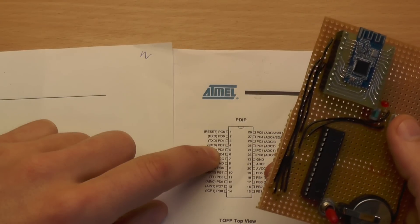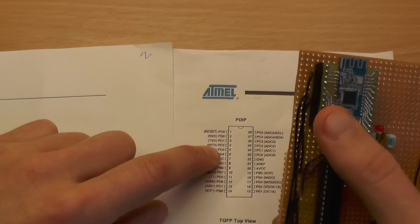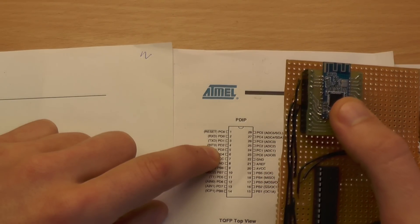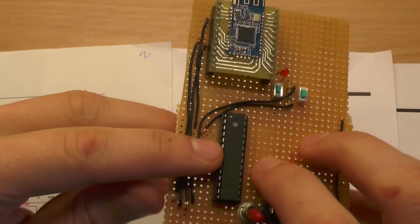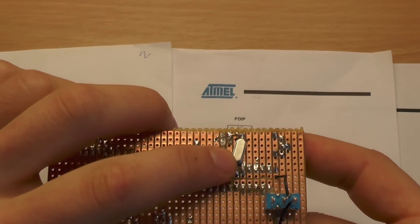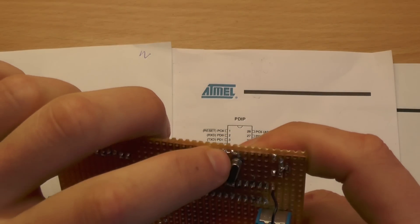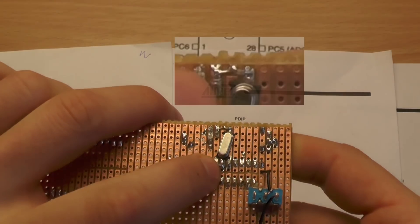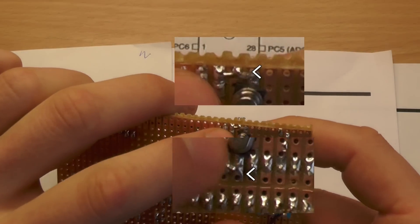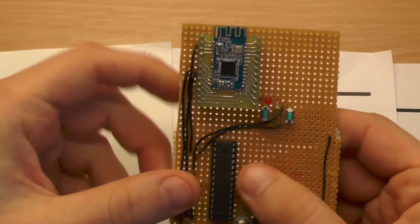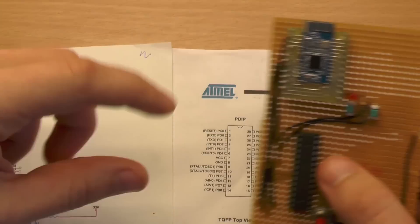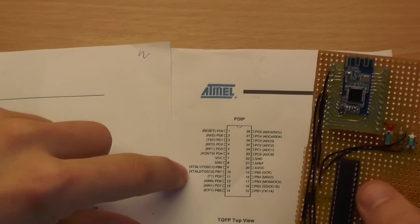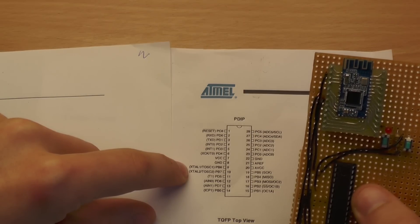The ATmega8 senses that button and sends the corresponding string via UART to the HM10 module. When you are using UART on the ATmega8 you need an external crystal and the 22 pF caps that I'm using here. Otherwise the internal oscillator isn't precise enough and you will get garbage over UART. The crystal is connected to XTAL1 and XTAL2. You have to set the corresponding fuses.